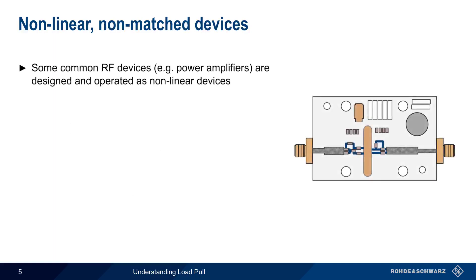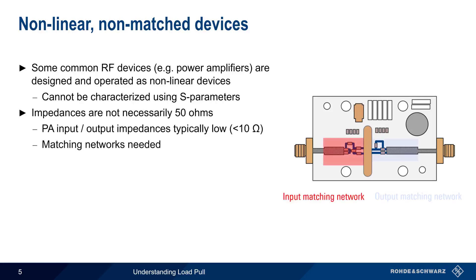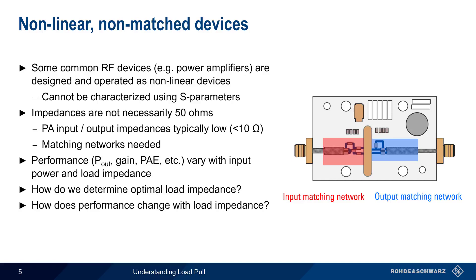There are, however, numerous common RF devices, such as power amplifiers, or PAs, that are designed and operated as non-linear devices. A PA is often designed to operate in compression in order to obtain maximum output power. Since these are large signal conditions, S-Parameters cannot be used to characterize these devices. In addition, the impedances involved may not necessarily all be 50 ohms. The input and output impedances of a power amplifier are typically quite low — 10 ohms or less — and thus matching networks are often required. Device performance in terms of output power, gain, power added efficiency, etc., will also vary as a function of both the input drive power and the load impedance. Therefore, one fundamental question is: how do we determine the optimal load impedance under large signal conditions, and how does performance change as the load impedance changes?